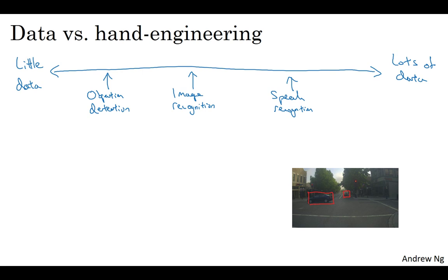Because of the cost of getting the bounding boxes, it's just more expensive to label the objects and the bounding boxes. So we tend to have less data for object detection than for image recognition. And object detection is something we'll discuss next week.